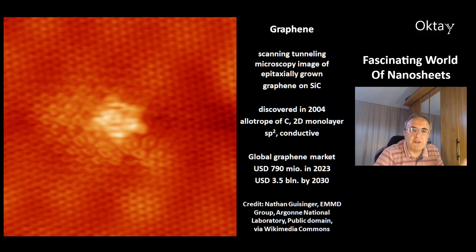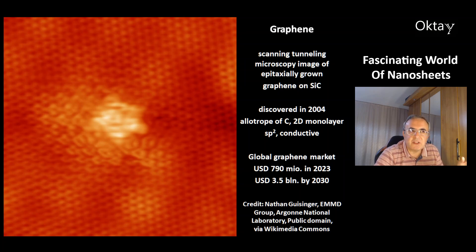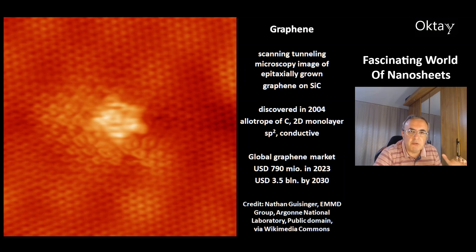This is an image of graphene, one example of a 2D material. This is the scanning tunneling microscopy image of epitaxially grown graphene on silicon carbide. Epitaxy means growing on a substrate — the growing of crystals on a substrate.